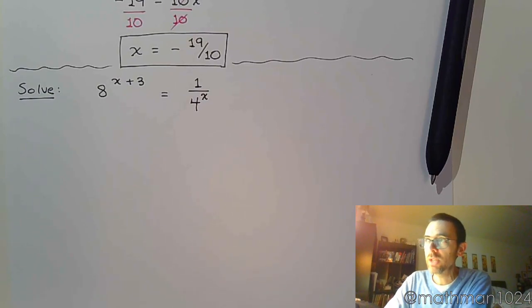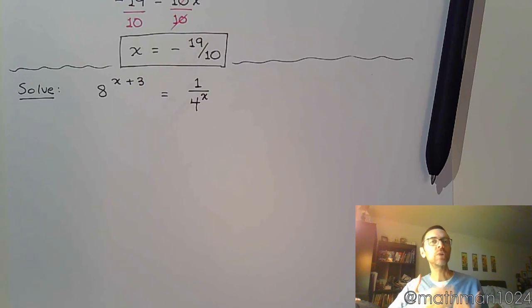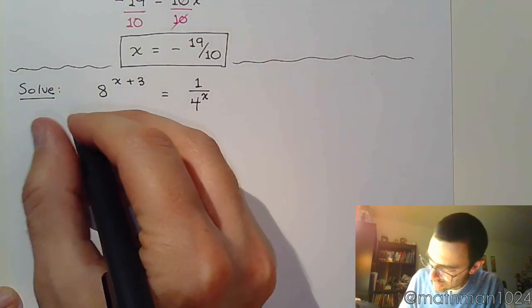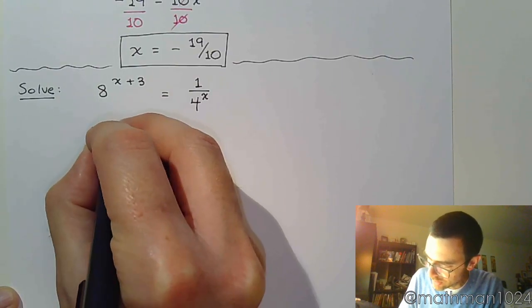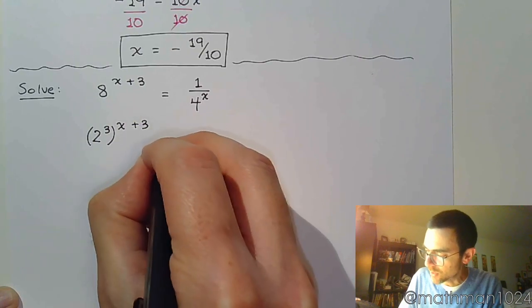It's not 4 because you can't raise 4 to a nice power to get 8. So, we've got to go smaller. What's 4 made up of? We know that 4 is made up of 2 times 2, so it's really 2 squared. And 8 can also be rewritten as a power of 2. Because 8 is 2 to the third.